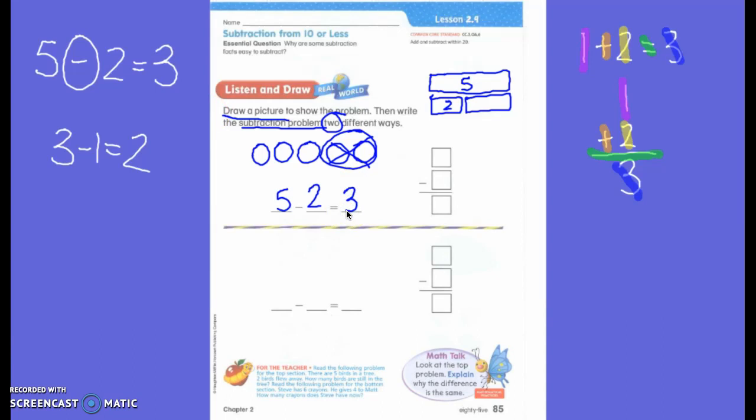Now, first grade, you have to be careful because we're going to write the same subtraction sentence. We're just going to write it vertically. Okay? So what number has to go first when I'm subtracting? Five because it's the biggest number. So write five in the first spot. And do you see how they put their subtraction sign over here kind of off to the side? What number do I have to write next? Two. Because that's how many we crossed out, right? And then remember this one line is the equal sign. It's a little bit different when we write it vertically, isn't it?